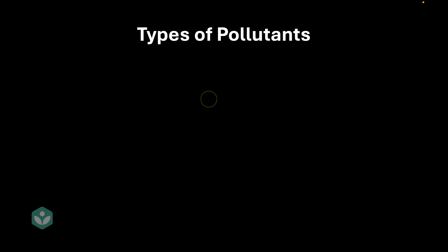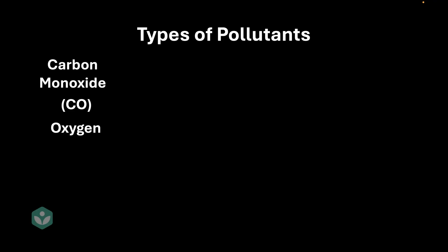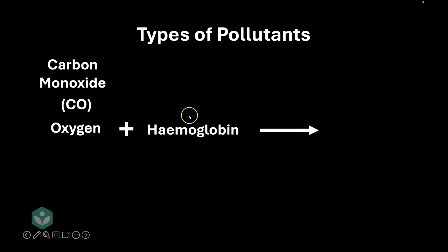Our next type of pollutant is carbon monoxide, with symbol CO. To understand why it's dangerous, we need to understand a little bit about how oxygen works in the human body. When oxygen combines with hemoglobin in the blood, it forms oxyhemoglobin — a chemical compound that is really important because it's what eventually gives us energy.